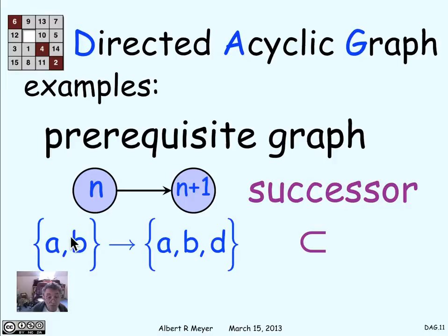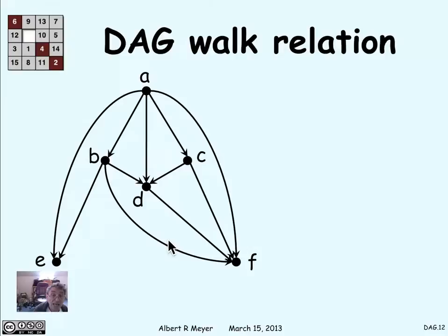Another similar example is the proper subset relation between sets. I draw an arrow from one set to another if the first set is contained in the second but they're not equal. So AB is a proper subset of ABD, since ABD has the extra element D, and I draw an arrow there. By the same reasoning, there can't be any positive length cycles in this graph, because if there were, it would mean a set had to be a proper subset of itself, which doesn't happen. So this is another basic example of a DAG. I hope you begin to see why DAGs are really all-pervasive in mathematics and other areas.